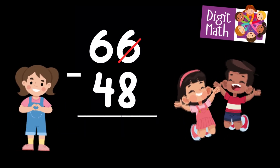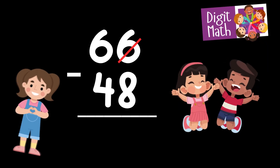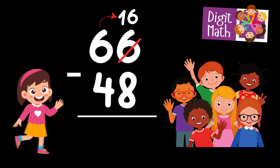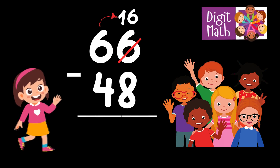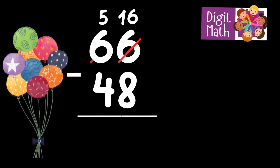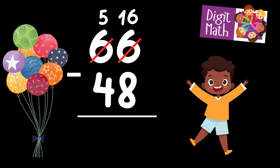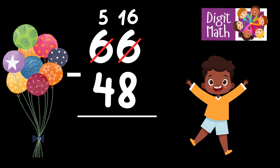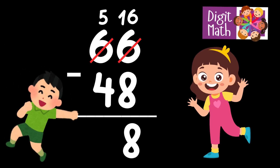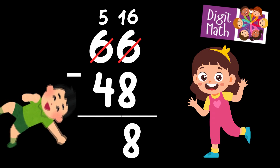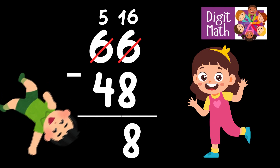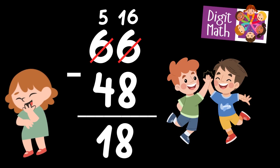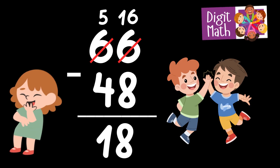In the Units column, we have 6 minus 8. Since it's not possible to subtract 8 from 6, we need to borrow from the Tens column. In the Tens column, we have 6. We take 1 from the Tens, leaving 5 in the Tens column and turning the Units column into 16. Now we have 16 in the Units column. Subtract 8 from 16, which equals 8. In the Tens column, we now have 5. Subtract 4 from 5, which equals 1. So the final result is 66 minus 48 equals 18.